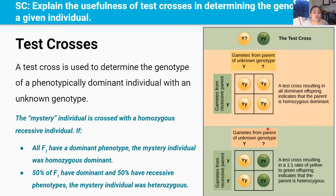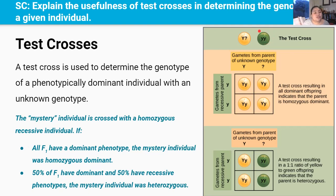There will also be situations where we have an individual with a dominant phenotype but an unknown genotype. For example, a mystery pea plant with yellow seeds — we can't tell if it's homozygous dominant big Y big Y, or heterozygous big Y little y, because both genotypes result in the same yellow pea phenotype. To determine the genotype of this mystery plant, we cross it with a homozygous recessive individual with genotype little y little y — a green pea plant. This kind of cross is called a test cross.